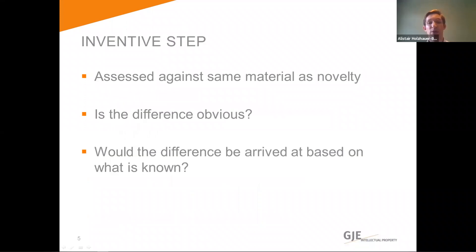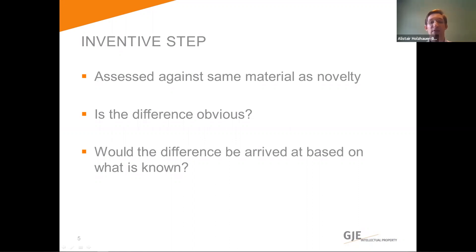Inventive step is possibly the most difficult aspect to assess for any innovation. This is because it addresses the question about whether an innovation is obvious over what came before it. For questions such as this, it's easy for the assessment to be subjective. However, each patent needs to be treated fairly, so there needs to be some way of turning that subjective test into an objective test. What happens to address this is the same starting point as novelty is used, meaning the same publicly available materials are used for the inventive step assessment. The differences between those materials and the innovation as defined in the patent are worked out, which is really what the novelty part is. Assuming there are differences, those differences are then assessed to work out if they would be obvious to a person who knows everything in the field of the innovation, but is incapable of having any inspiration themselves, any spark of genius.